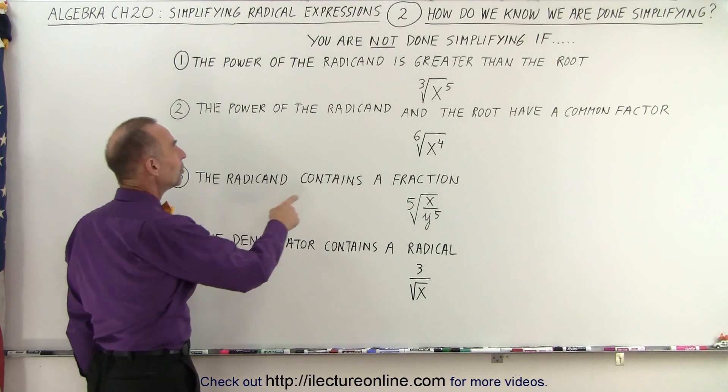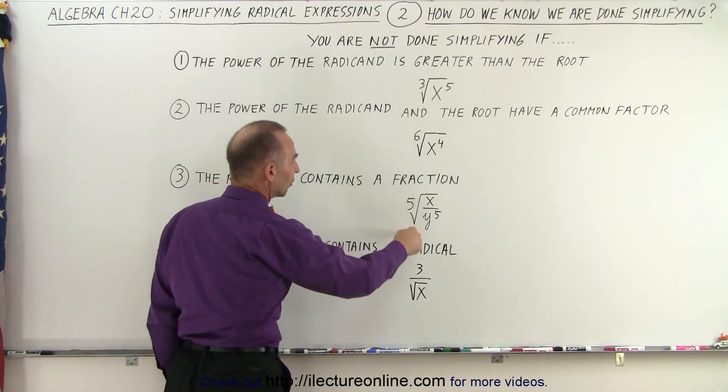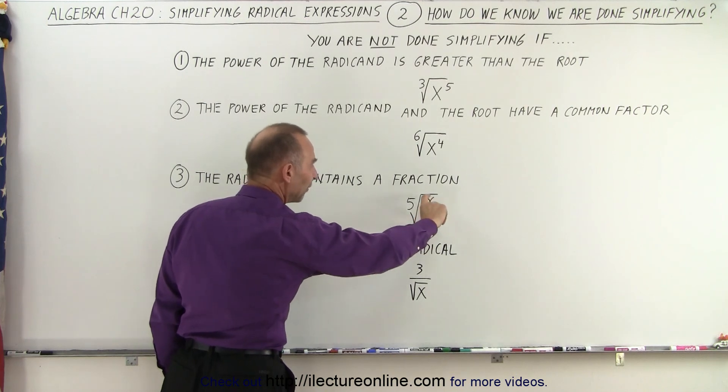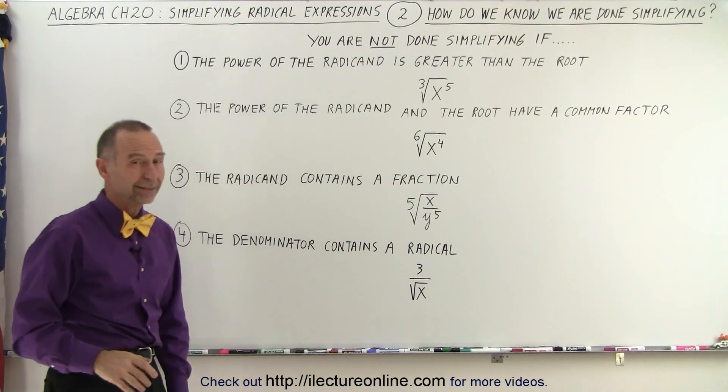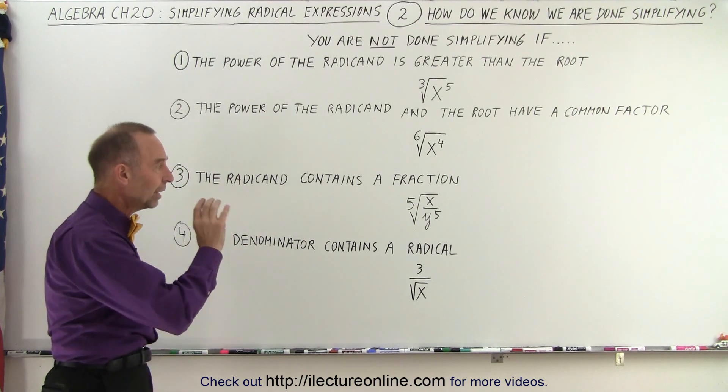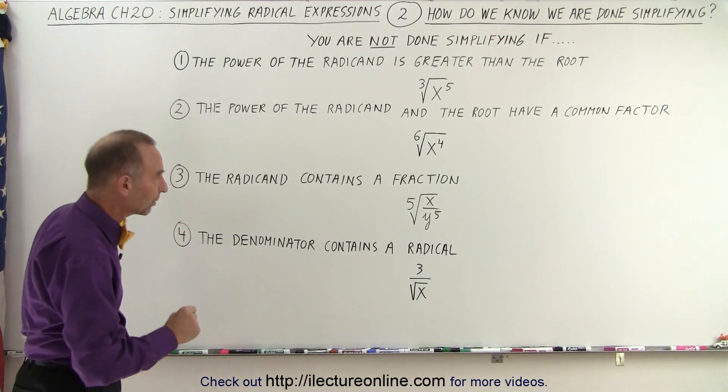Thirdly, the radicand contains a fraction. So, we have the square root symbol here, this is actually the fifth root of a fraction. Well, then you're not done. You want to separate the fraction, you want to separate the numerator from the denominator, and write them each under their own radical sign.